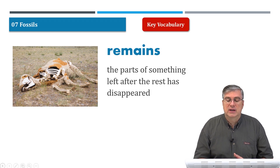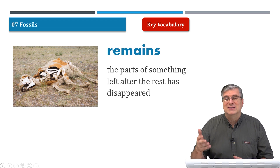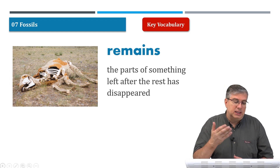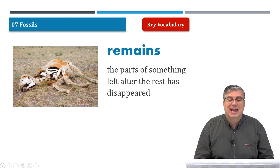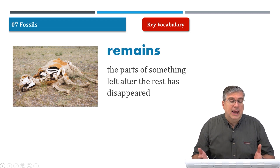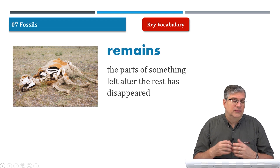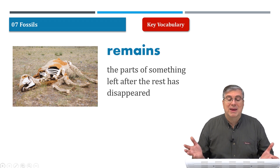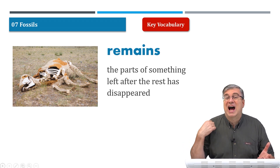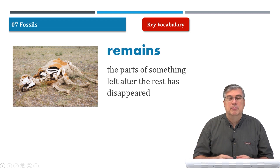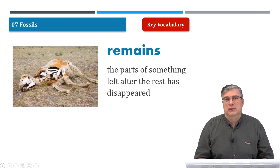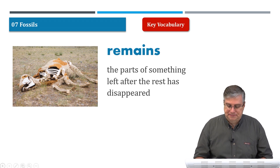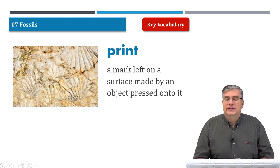'Remains' — what is rotting? The remains of an animal or plant are rotting. The remains are the parts of something left after the rest has disappeared. Here we can see what looks like a cow. The cow died in the field, started to rot, and all the flesh rotted away. What remains? Some of the skin and the bones. Bones are very tough, so they are the last to rot.